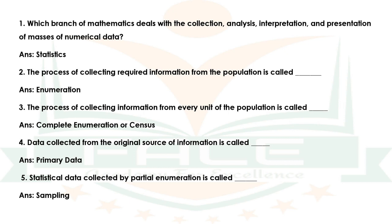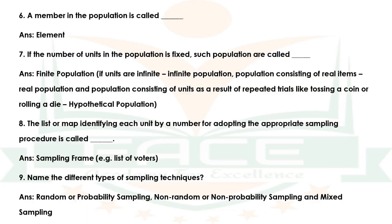Question 4 — Data collected from the original source of information is called dash. Answer: Primary data. Question 5 — Statistical data collected by partial enumeration is called dash. Answer: Sampling. Question 6 — If the number of units in a population is fixed, such populations are called dash. Answer: Finite population.